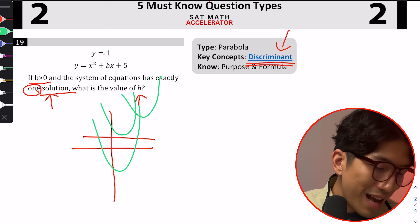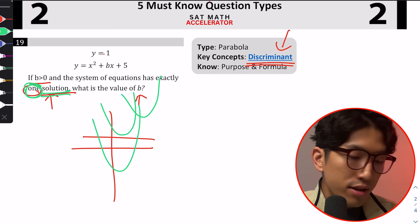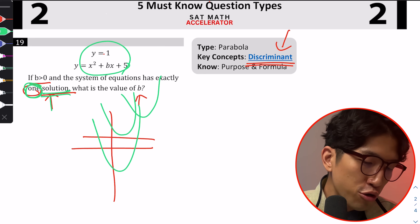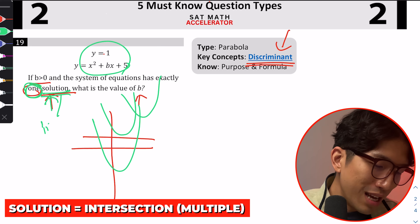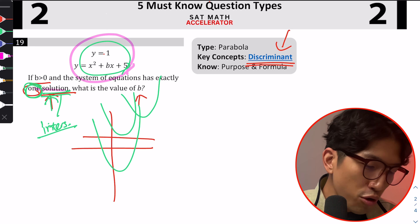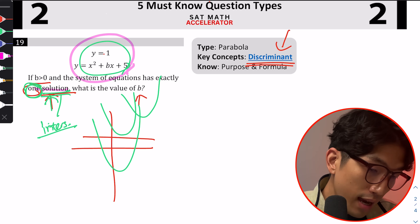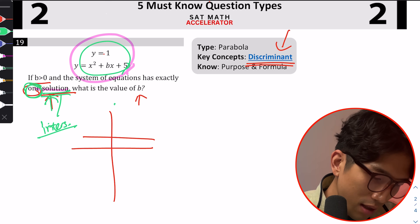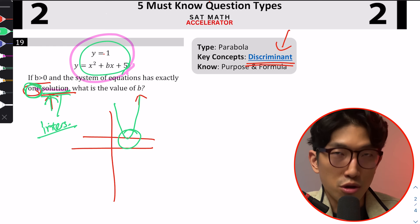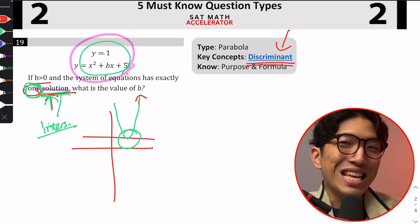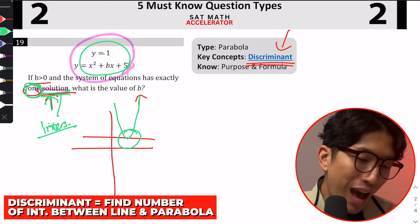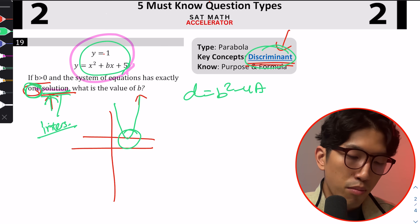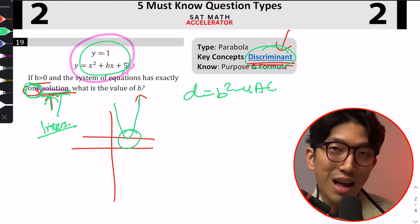The question tells us it has exactly one solution. Whenever you're dealing with multiple equations, multiple shapes, multiple graphs, and it's talking about solutions, solution essentially means intersection. When two things have one solution, that means they have one intersection. Whenever you're talking about the intersection between a line and a parabola, you have to use the discriminant, which has a formula of b squared minus 4ac.